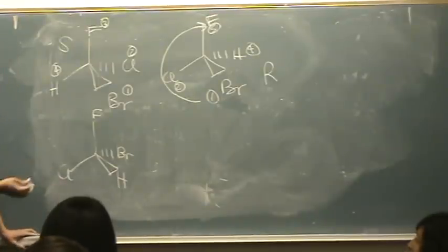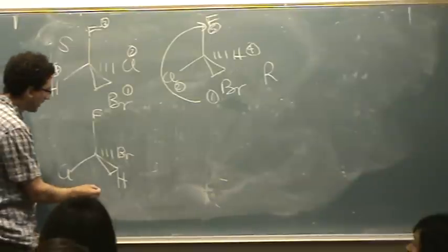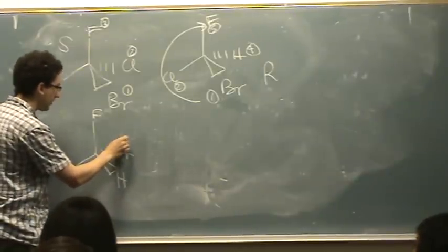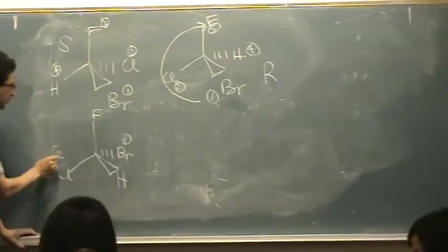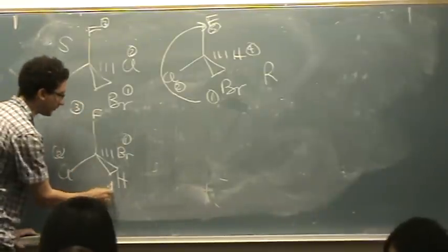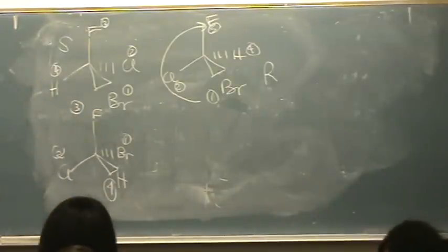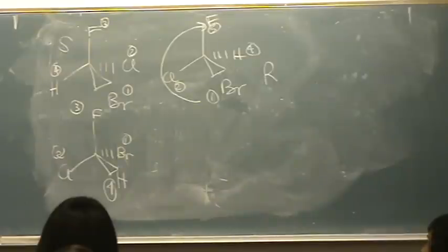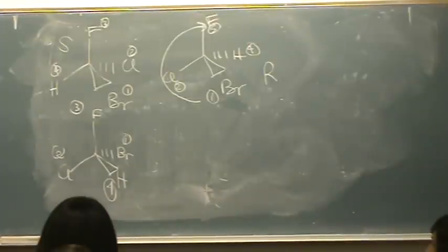Moving to the next one: here we have the hydrogen in the front. Same substituents, so: 1 for bromine, 2 for chlorine, 3 for fluorine, and 4 for hydrogen. Using the bus driver method, you're basically holding the steering column towards you — you're on the opposite side of the steering wheel. Going 1, 2, 3 and flipping around like normal, I'm turning left.